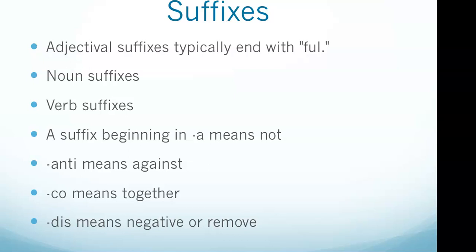A suffix beginning in 'a' means 'not' — for example, 'asymmetric' means not symmetric. 'Anti' means against, so think of anti-inflammatory. 'Co' means together, like co-founder — meaning they founded something together. The prefix 'dis' means negative or remove, such as dislike. And finally, the suffix '-logy' means the study of, as in biology — the root 'bio' means life, so biology means the study of life.